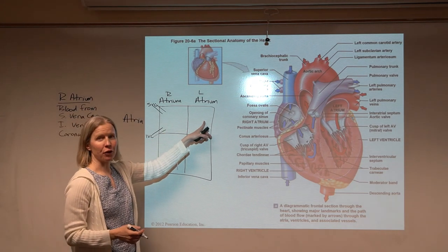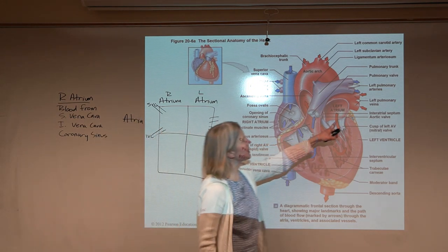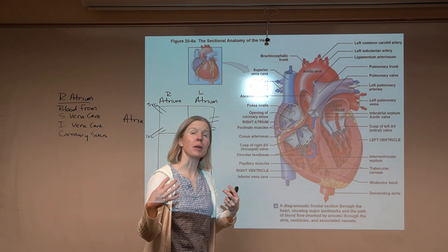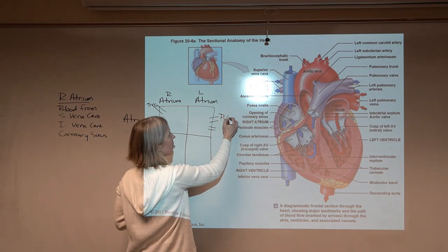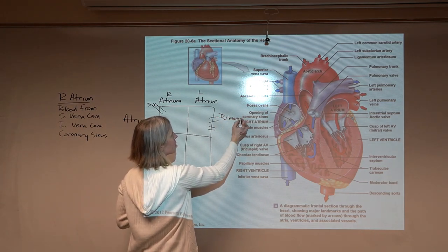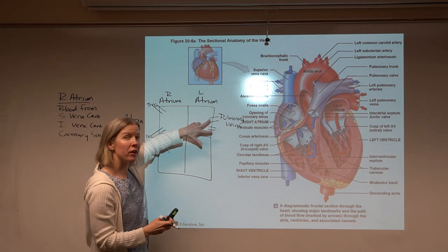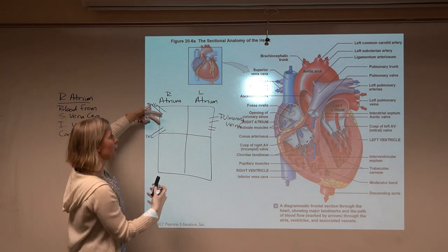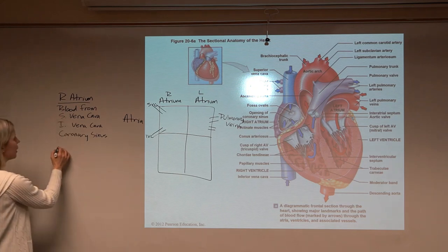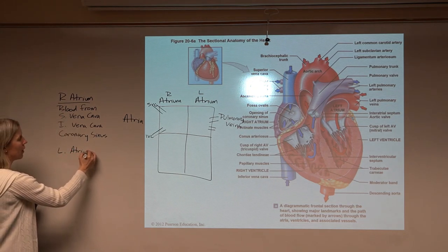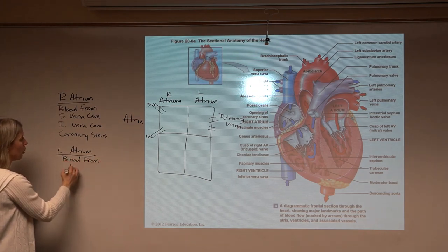The left atrium receives blood from the lungs via the pulmonary veins. There are two pulmonary veins coming from the left lung and two from the right lung, though that would get complicated to draw. So the left atrium receives blood from the pulmonary veins.